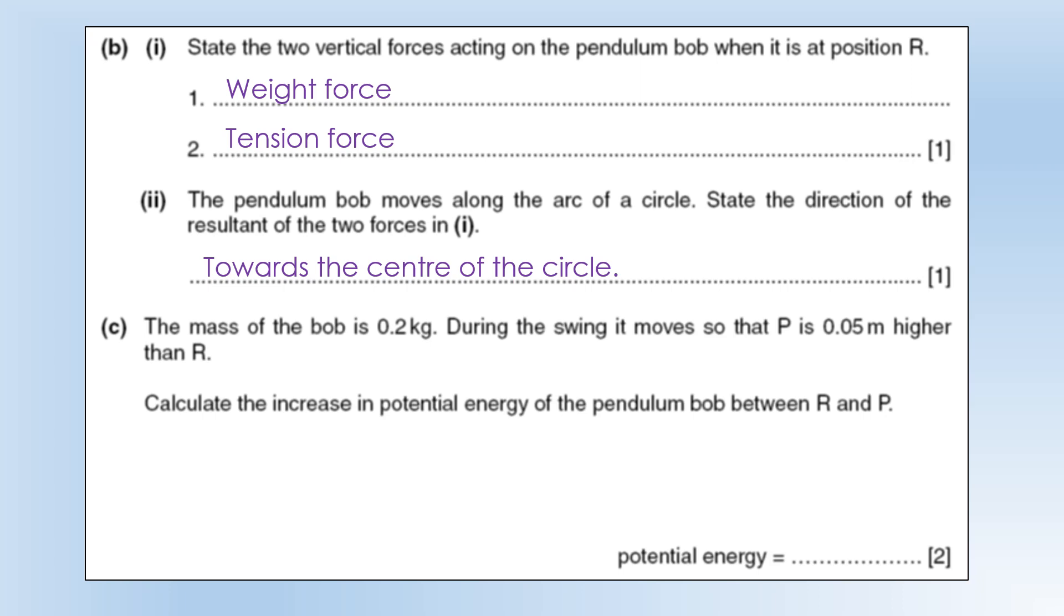The mass of the bob is 0.2 kilograms. During the swing it moves so that p is at 0.05 meters higher than r. Calculate the increase in potential energy of the pendulum bob between r and p.